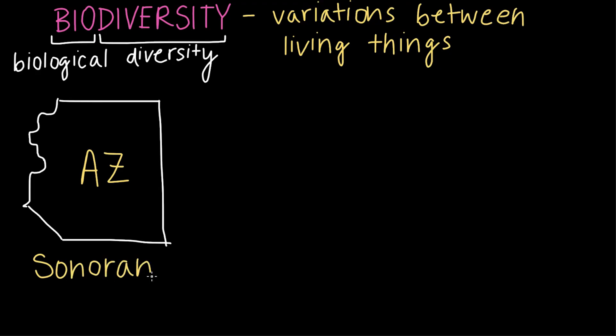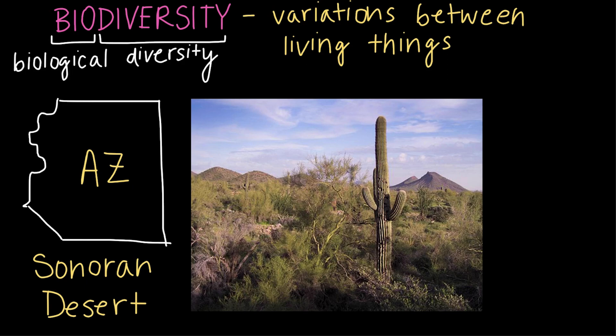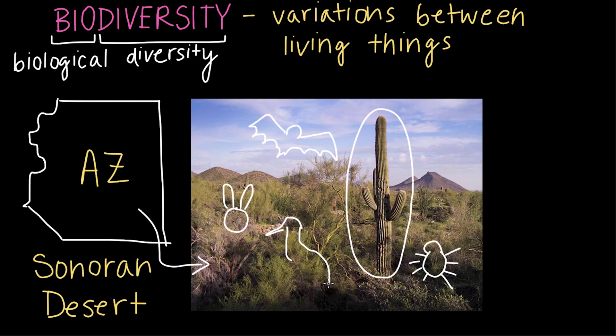But if we take a closer look at a place such as the Sonoran Desert, and here's a picture, we would find all kinds of different living things like saguaro cacti, jackrabbits, tarantulas, silver-haired bats, and the Roadrunner, which is my personal favorite.